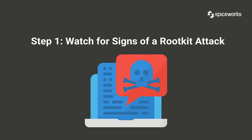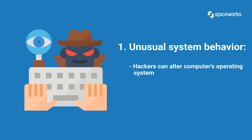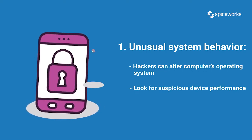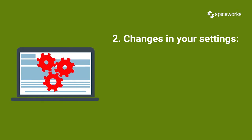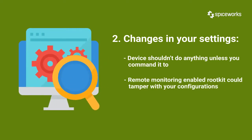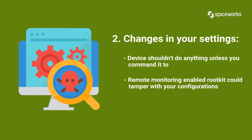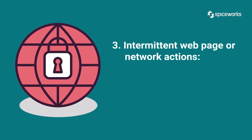Watch for signs of a rootkit attack. The following warning indicators may indicate that your device is infected with a rootkit. Number one: unusual system behavior. Hackers can use rootkits to alter your computer's operating system. If your device is performing suspiciously, it could result from a rootkit installed by a hacker. Number two: changes in your settings. Your device shouldn't do anything unless you command it. Somebody with rootkit-enabled remote monitoring could tamper with your configurations and settings.